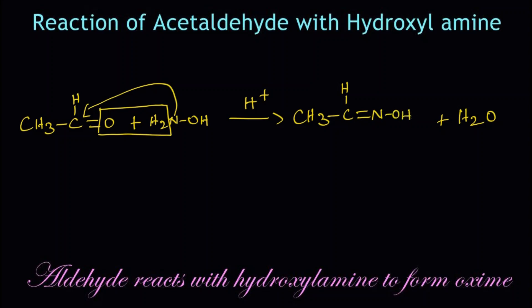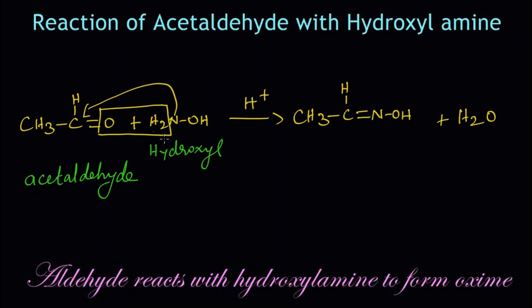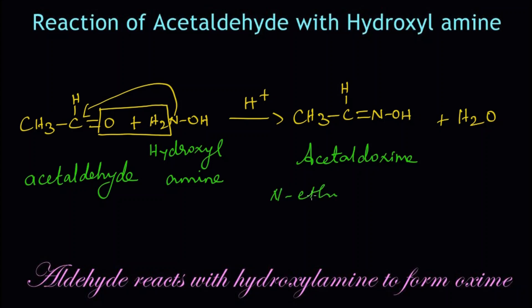This product is called acetaldoxime. Let's name the structures: this is acetaldehyde and this is hydroxylamine — 'hydroxy' and 'amine'. When both react in the presence of an acid catalyst, we get the oxime and a water molecule. The IUPAC name of the oxime is N-ethylidine hydroxylamine.